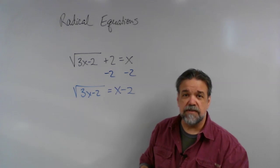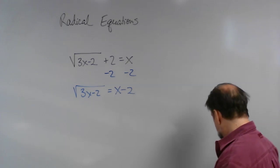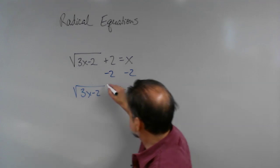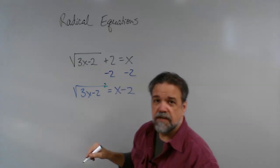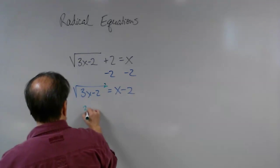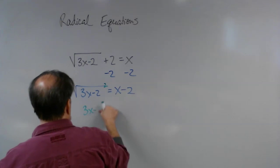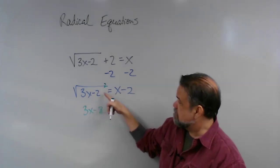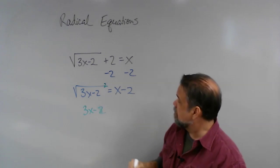Whatever you do to this side you have to do to that side. So that means I'm going to square both sides. Now I have to be careful when I'm squaring both sides. This is easy, I'm just going to take that thing squared and I'm going to get 3x minus 2.